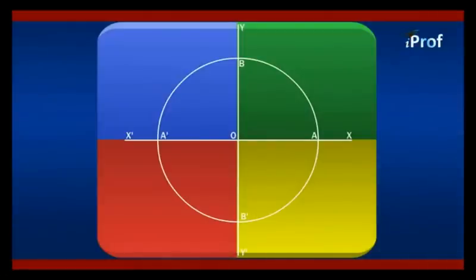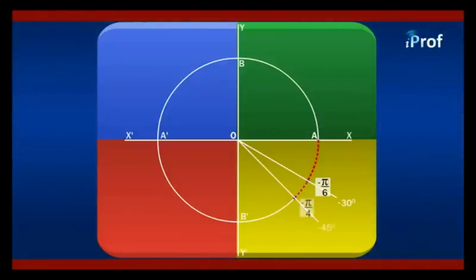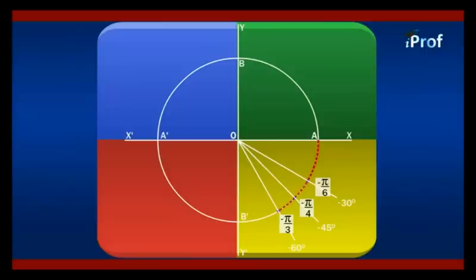To demonstrate this: from OA, going in the clockwise direction gives a negative angle. If we take 30 degrees in the negative direction, it will be taken as −30 degrees, because it is in the clockwise direction, and it will be equal to −π/6. Similarly, if it is 45 degrees clockwise, that is −45 degrees, it will be equal to −π/4. At −60 degrees, it will be equal to −π/3. At −90 degrees, it will be equal to −π/2.